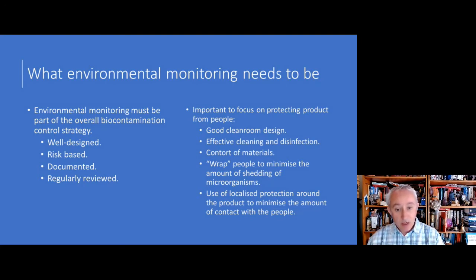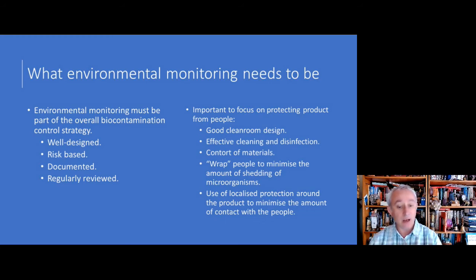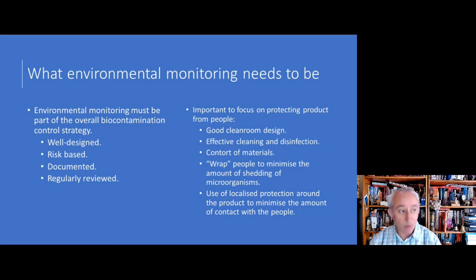Environmental monitoring is of great importance to the overall contamination control strategy and is a regulatory expectation. It needs to focus on all contamination sources — whether from people, materials, air, or water — and it needs to reinforce all the control mechanisms, including good cleanroom design, effective cleaning and disinfection, appropriate gowning and the use of localised protection, and putting barriers in place so that the interaction between people and product is minimised.